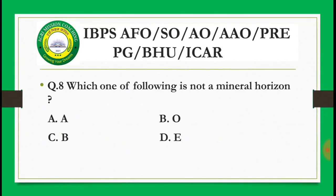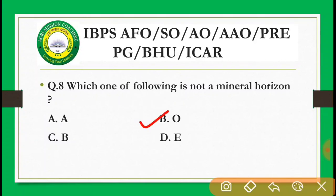Next question: Which one of the following is not a mineral origin horizon? Options are: A horizon, O horizon, B horizon, E horizon. The correct answer is B — O horizon, which is called organic horizon or carbonic horizon. It is a non-mineral horizon, so the correct answer is O horizon.